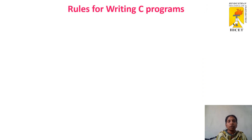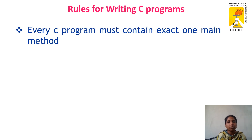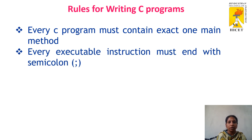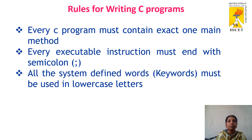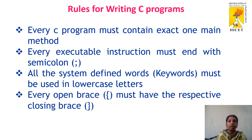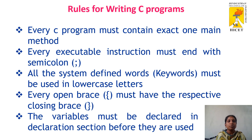Now, what are the rules for writing a C program? Every program must contain exactly one main method — we should not use multiple main methods. All executable statements must be written inside a function, and every executable statement must end with a semicolon. All system-defined words, called keywords, must be used in lowercase. Every open bracket must have a respective closing bracket. Variables must be declared in the declaration section before they are used. This is the structure of the C program.